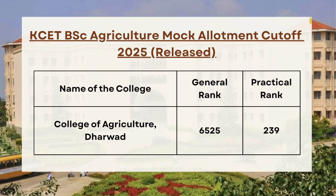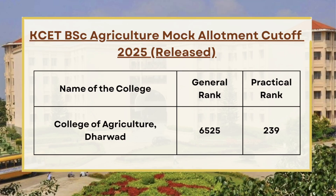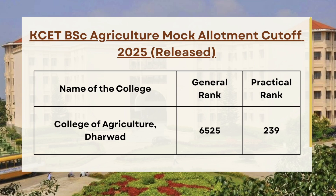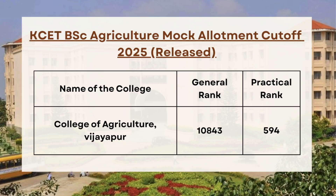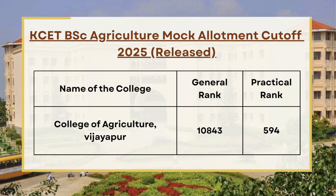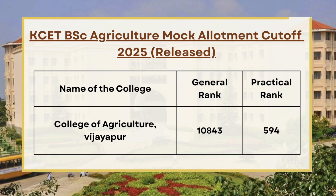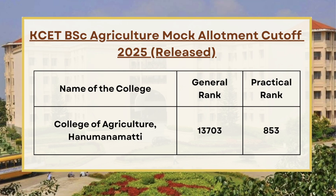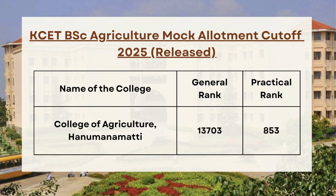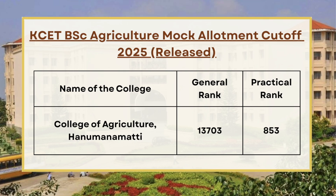Before we have the cutoff for other colleges, if you have not liked and subscribed then don't forget to do so. Next we have College of Agriculture Vijapur, so for general the cutoff is 10843 and for practical the cutoff is 594.